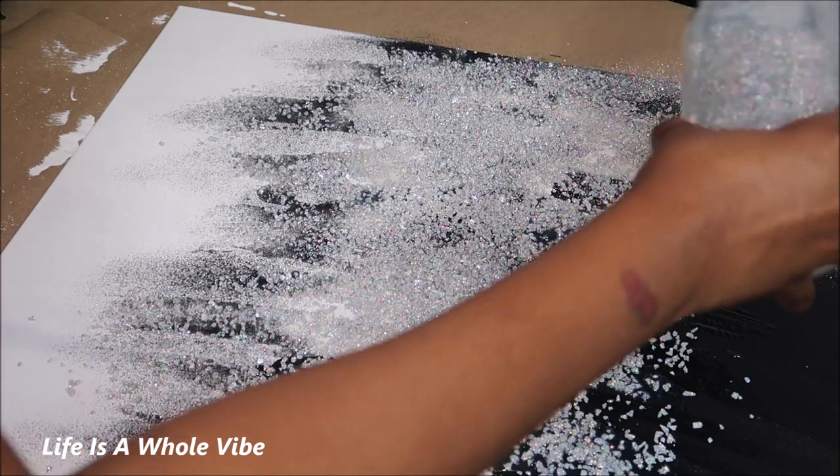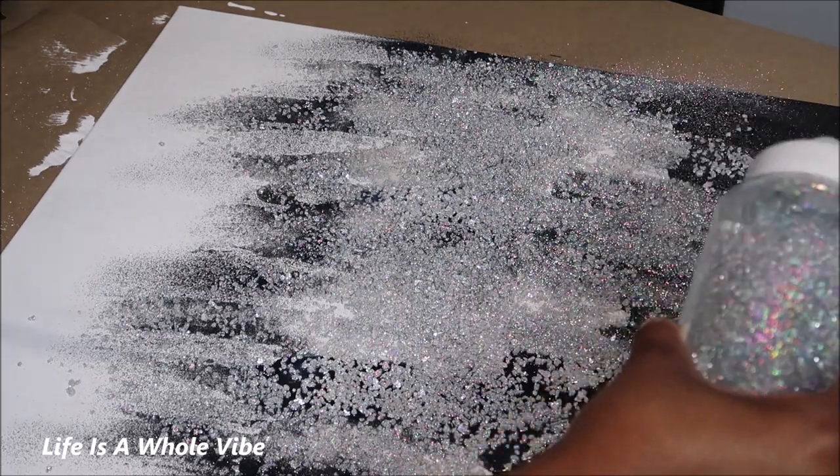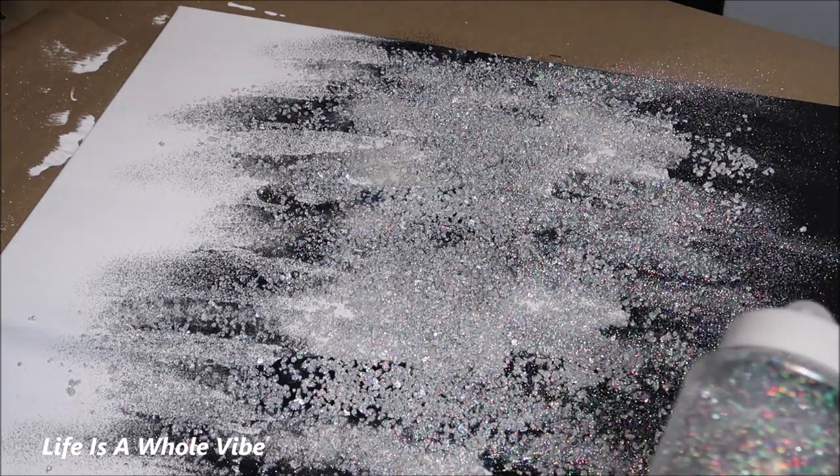Now I'm going to be using this silver glitter on the black side of the painted canvas so it can give it a nice little shine there. I'm going to add some to the middle as well.